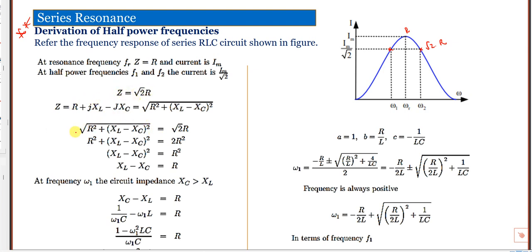At f1 and f2, Z equals root 2 times R. For a series RLC circuit, Z is given by R + j(X_L − X_C). The magnitude is: Z = √(R² + (X_L − X_C)²). This is the magnitude of impedance at any frequency.